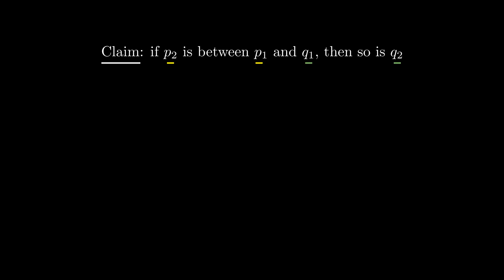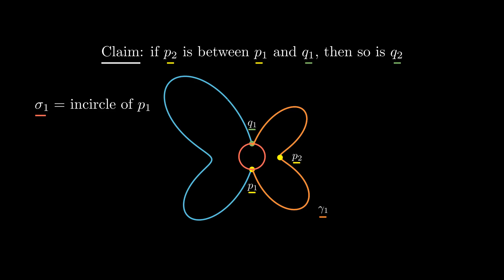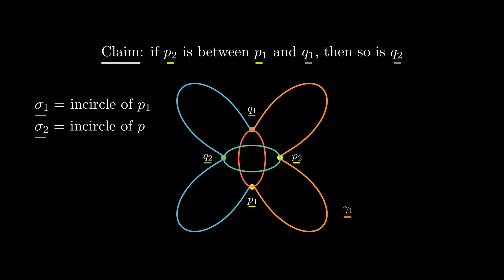If that was not the case, sigma2 would have to cross sigma1 in order to touch gamma at a point not in gamma1. By doing so, there would be at least three distinct points of intersection between sigma1 and sigma2.